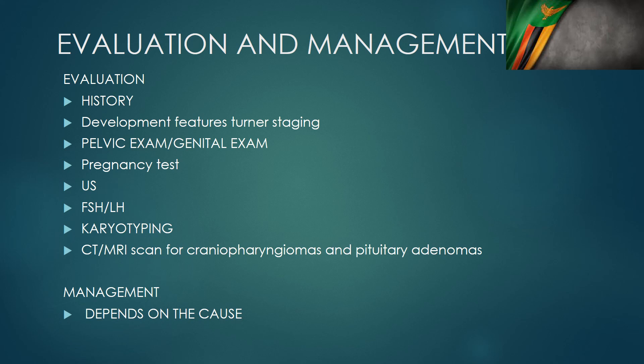For craniopharyngiomas and pituitary tumors, a CT scan and MRI of the brain might help as well. Management of these patients really depends on getting a proper history, having all the important investigations done, and getting to the diagnosis. Once we get to the diagnosis, we will manage the specific diagnosis in front of us. So that was my attempt to cover amenorrhea for you in 12 minutes. Thank you so much for listening, and see you in the next one.